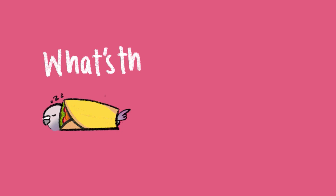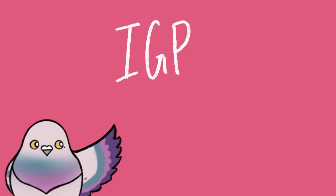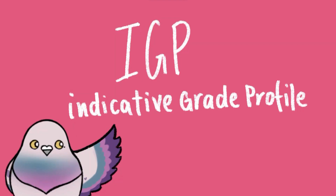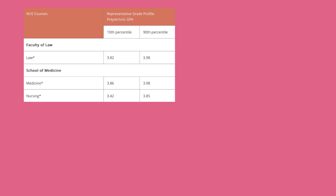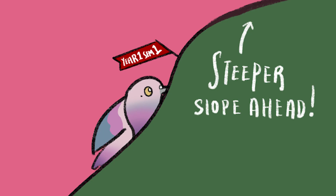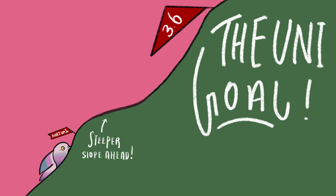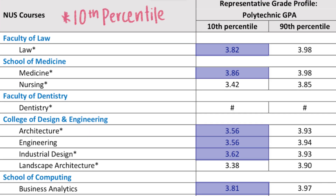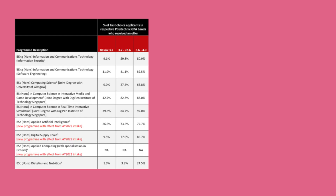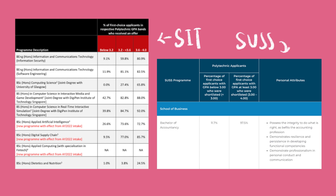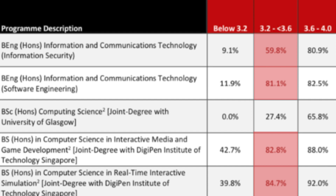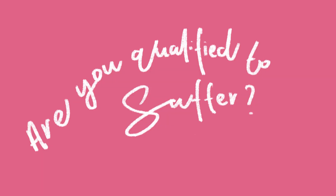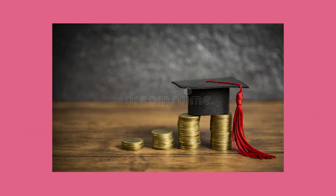Second question: what is the GPA required for local universities? The IGP, Indicative Grade Profile, is released every year. You can check the IGP to find out what the cutoff point for admitted students was last year. For NUS, NTU, SMU, and SUTD, a good GPA to aim for would be 3.6 and above, seeing that the majority of cutoff points in 2023 are around that area. For SIT and SUSS, I would say aim for at least a 3.2, which is around the median GPA of students admitted to SIT. Of course, for popular courses such as computer science and law, 3.9 to 4.0 might be required. The same applies for scholarships at universities.